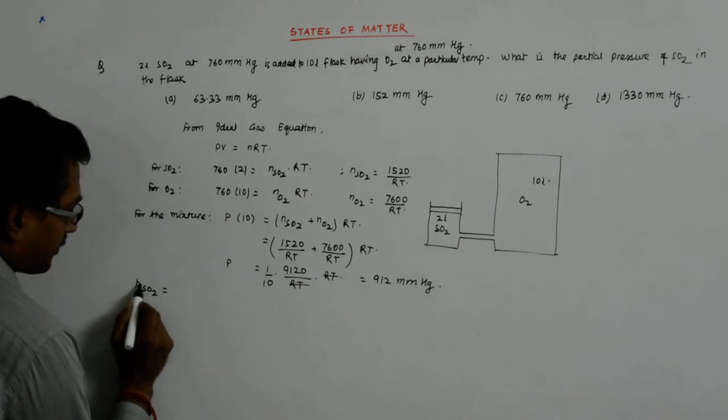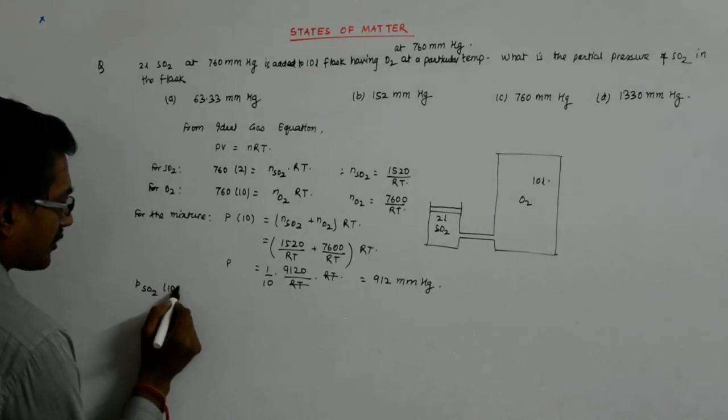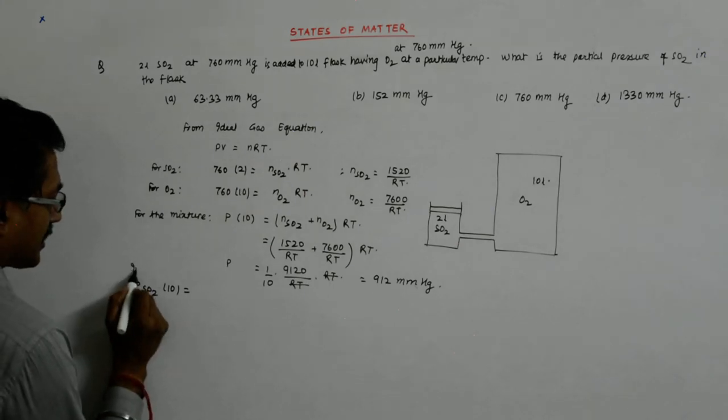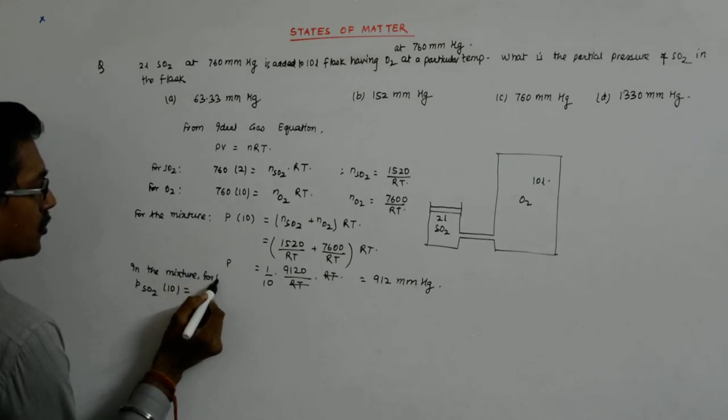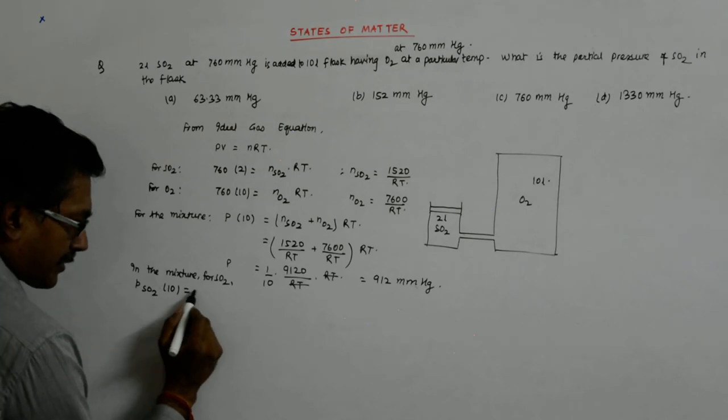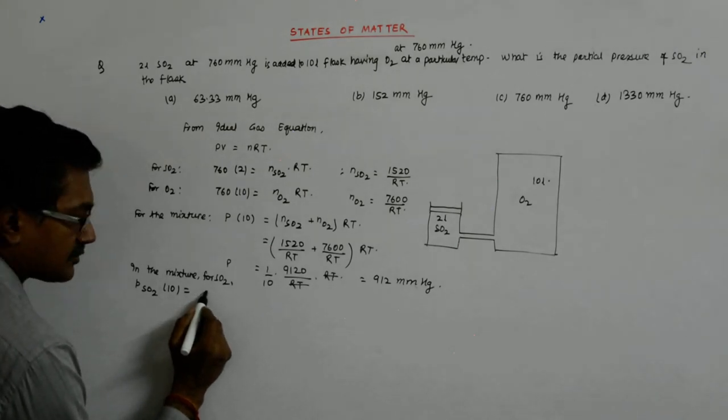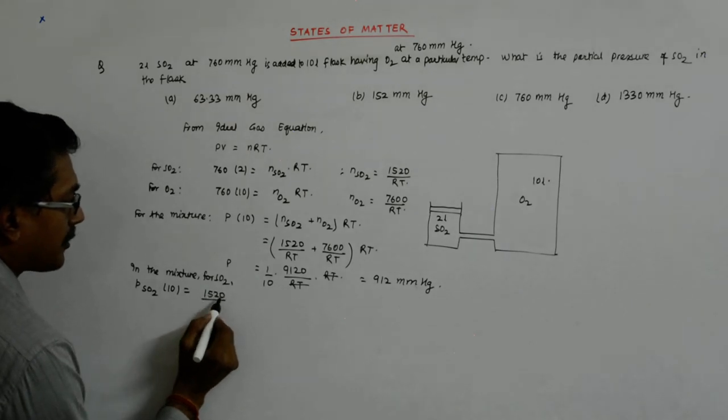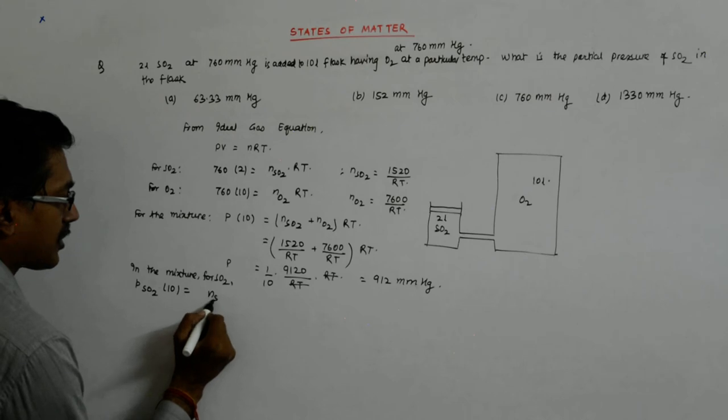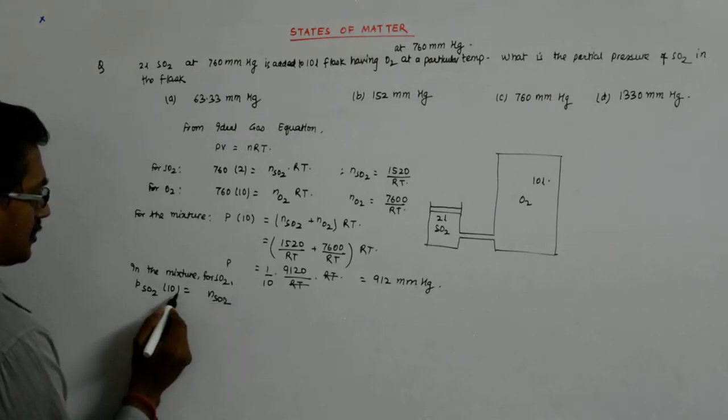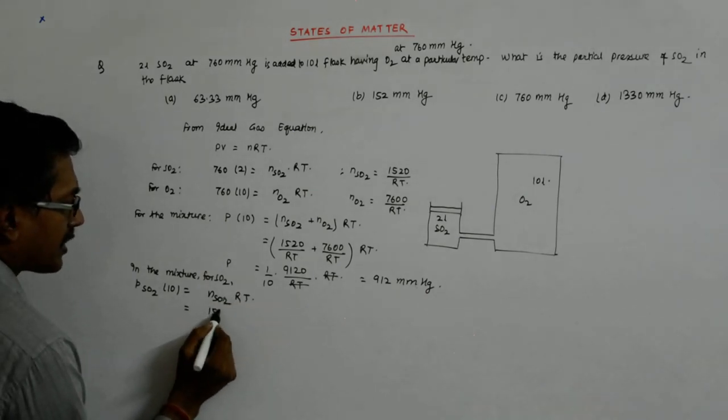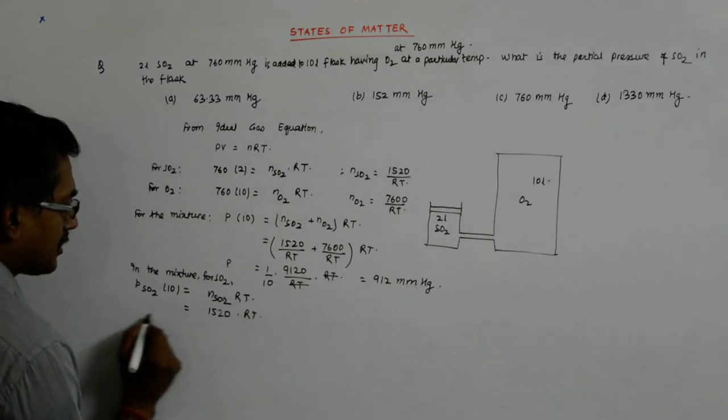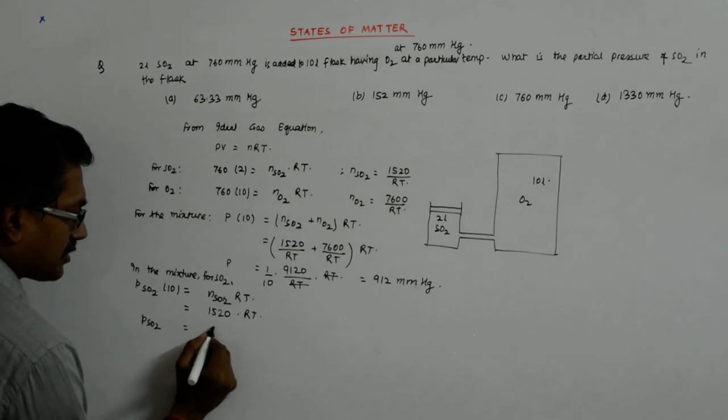Now this SO2 has gone into a 10 liter flask and has expanded to 10 liters. So PSO2, so P into V, P into 10 is equal to in the mixture for SO2, PSO2 into 10. PV is equal to N. N is what? 1520 upon, this is NSO2, is it not? NSO2 into R into T.